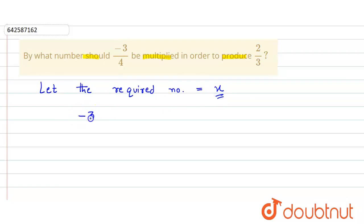So here we get minus 3 divided by 4 should be multiplied to x, so that we get this 2 by 3. So that will be equals to 2 divided by 3.